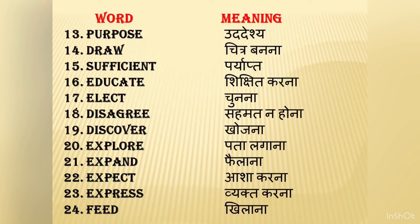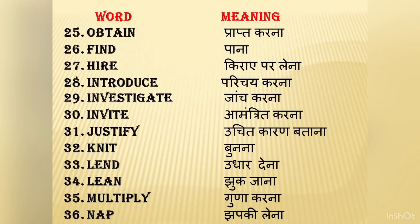Obtain also means prapt karna — to obtain, just like attain and get. He obtained 90% marks. He obtained first position. Find means pana — where can I find this book? Hire means kiraye par lena — to rent. We hired a taxi. We hired a bus. Introduce means parichay karana — please introduce him. Investigate means janch karna — the police are investigating into this matter. Invite means amantrit karna — we have invited him as chief guest. Justify means uchit karan batana — he justified why he did not come.